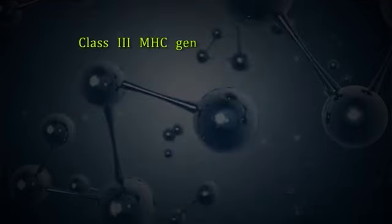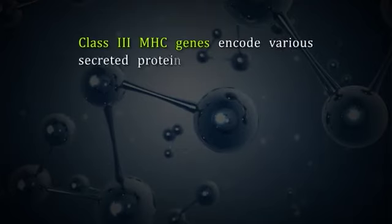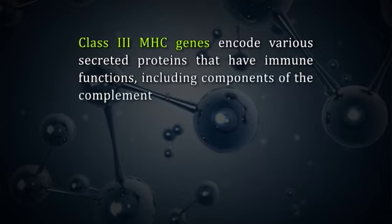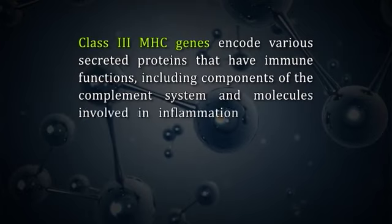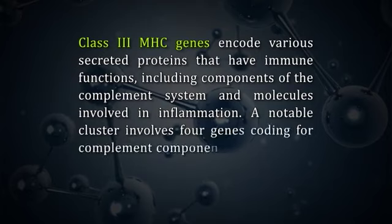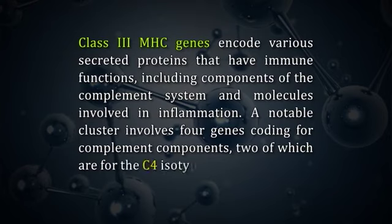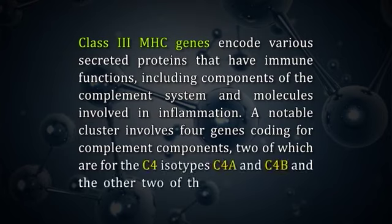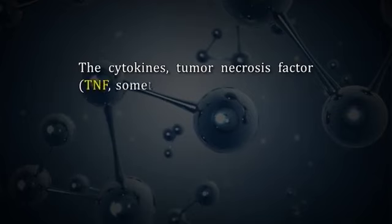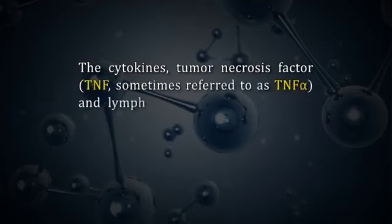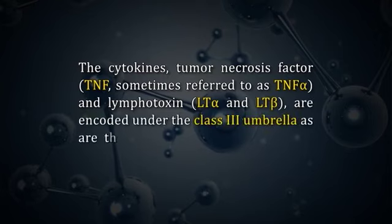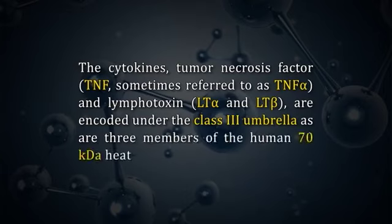Class 3 MHC genes encode various secreted proteins that have immune functions, including components of the complement system and molecules involved in inflammation. A notable cluster involves 4 genes coding for complement components: 2 for the C4 isotypes C4A and C4B, and 2 for C2 and factor B. The cytokines tumor necrosis factor TNF-alpha and lymphotoxin LT-alpha and LT-beta are encoded under the class 3 umbrella, as are 3 members of human 70 kilodalton heat shock proteins.